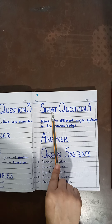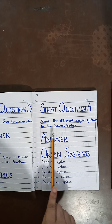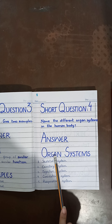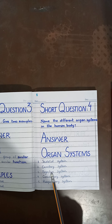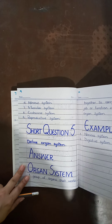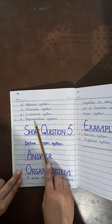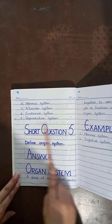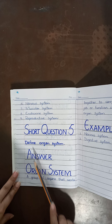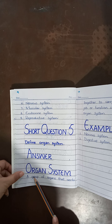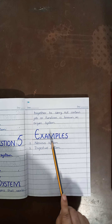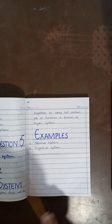Short question number four: name the different organ systems in the human body. The organ systems are: skeletal system, excretory system, digestive system, circulatory system, respiratory system, nervous system, muscular system, endocrine system and reproductive system. Question number five: define organ system. A group of organs that work together to carry out a certain job or function is known as an organ system. Examples are the nervous system and digestive system.